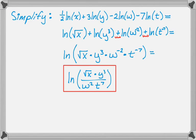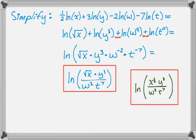Now let me show you how I actually do this problem. When I see a bunch of natural logs with the same base and addition and subtraction, I just start one giant natural log and know there's going to be a fraction: anything with a plus goes in the numerator — x to the one-half and y cubed — and anything with a minus goes in the denominator — w squared and t to the seventh. Anyway, those are some properties of logs. Hope you found this helpful, and good luck.